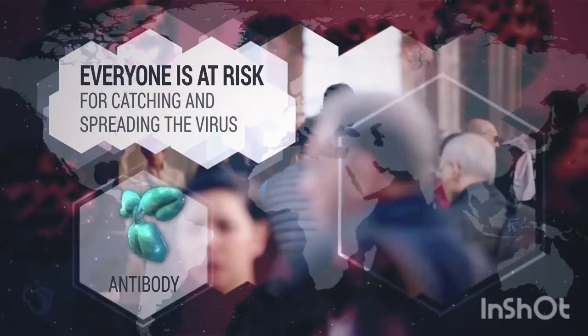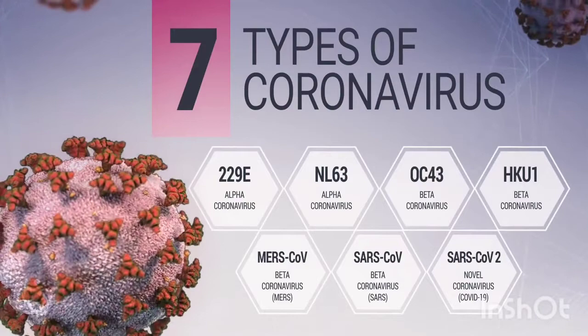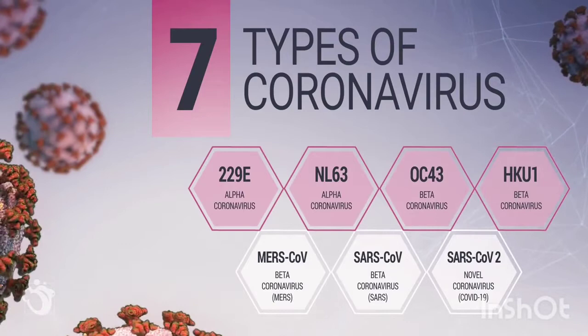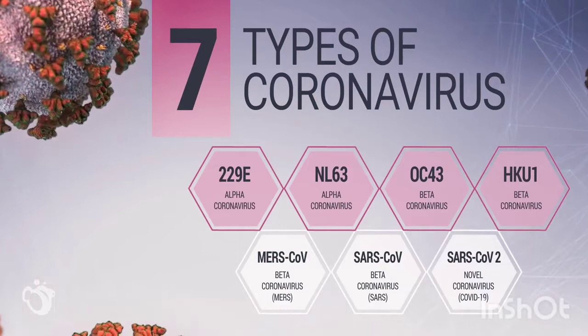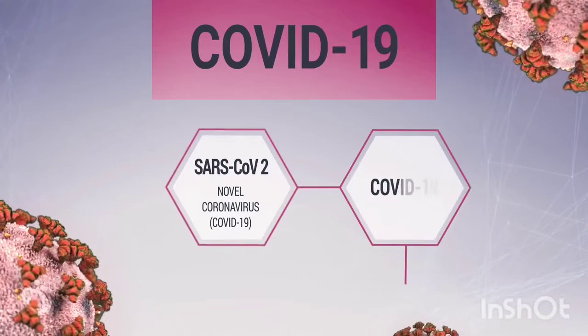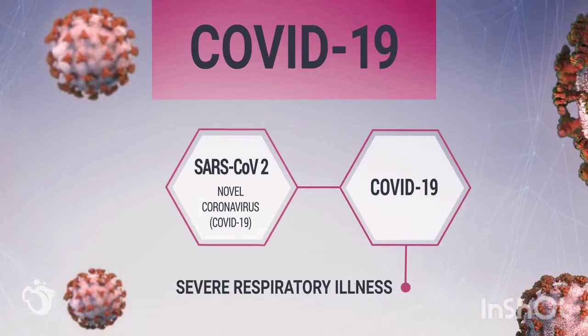With the discovery of SARS-CoV-2, there are now seven types of coronavirus known to affect humans. Four regularly recirculate among humans and mostly cause mild to moderate upper respiratory tract symptoms that most people think of as the common cold. SARS-CoV-2 causes a disease called COVID-19, a severe respiratory illness that can be deadly, particularly for older people and those with underlying health conditions.